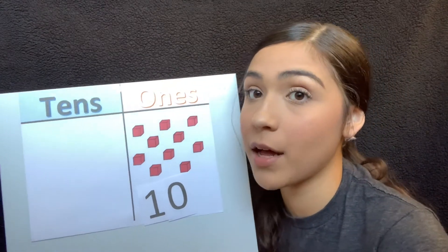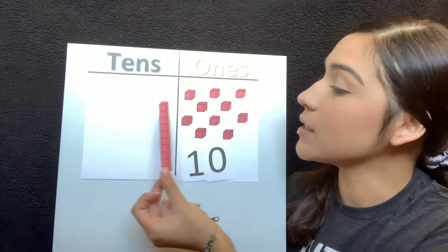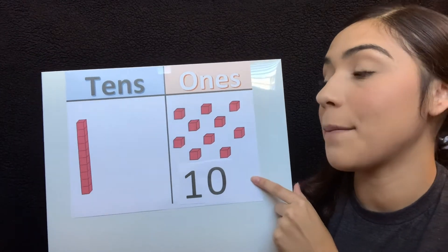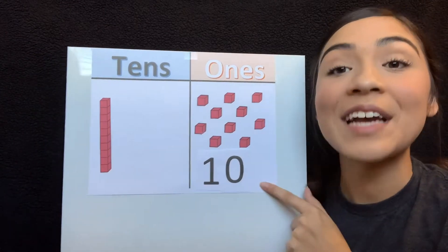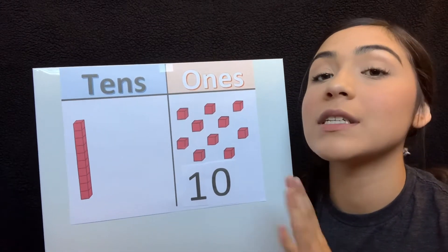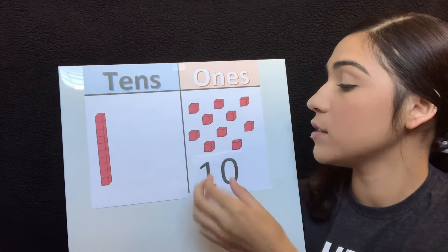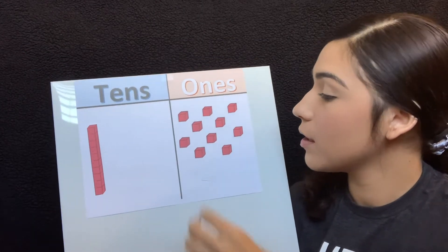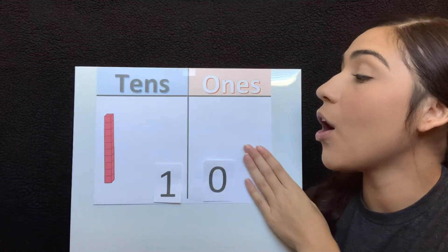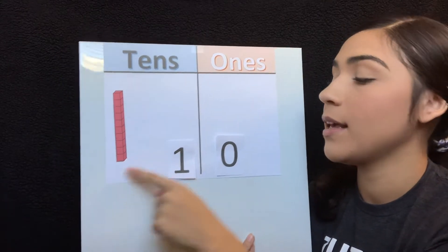Have you guys ever seen the ten block? Well this is what our ten block looks like. All of the ones are stacked together to make one ten. Now friends, can you tell me how many ones make a ten block? Ten ones make a ten block! Great job guys! Now we move our ten block to the tens place on the left, which then leaves us with zero ones. So we're going to take off all of our little ones. So now that we've taken all our ones and made it a ten block, now we have one ten and zero ones.